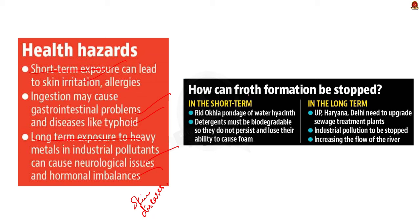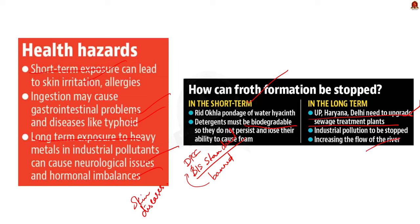In the short term, Okhla pondage can be cleared of water hyacinth, and biodegradable detergents can be encouraged. The Delhi Pollution Control Committee (DPCC) has banned the sale, storage, and transportation of soaps and detergents not conforming to quality standards set by the Bureau of Indian Standards (BIS). In the long term, states like UP, Haryana, and Delhi can upgrade sewage treatment plants, industrial pollution must be stopped through proper monitoring, and steps can be taken to increase the river's flow during the season.